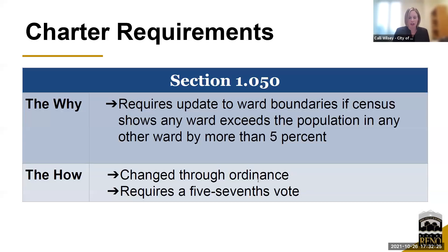The Reno City Charter triggered this process for us. The charter sets many of our requirements and says it requires us to update our ward boundaries if the census shows any ward exceeds the population in any other ward by more than five percent. Last year's 2020 census triggered that mark for us. When we get to council, the ward map must be changed through an ordinance and it will require a five-sevenths vote.